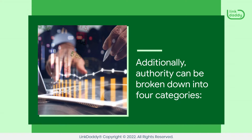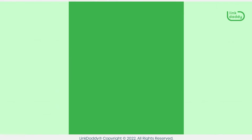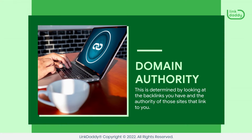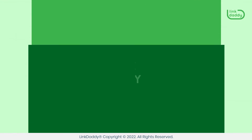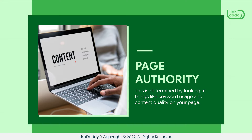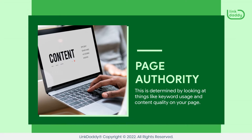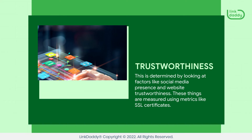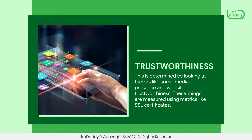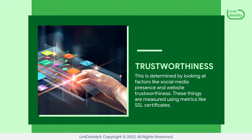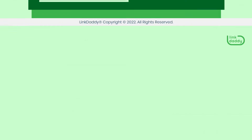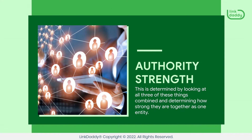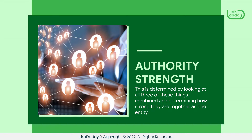Additionally, Authority can be broken down into four categories. Domain Authority is determined by looking at the backlinks you have and the authority of those sites that link to you. Page Authority is determined by looking at things like keyword usage and content quality on your page. Trustworthiness is determined by looking at factors like social media presence and website trustworthiness, measured using metrics like SSL certificates. Authority Strength is determined by looking at all three of these things combined and determining how strong they are together as one entity.